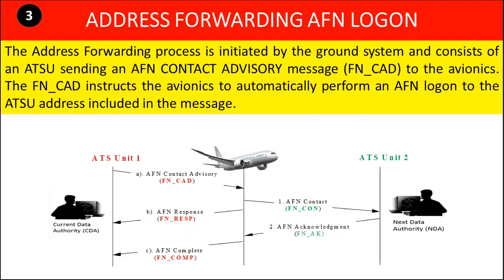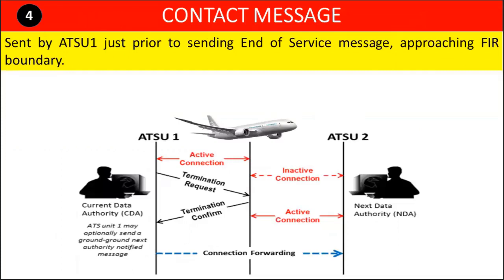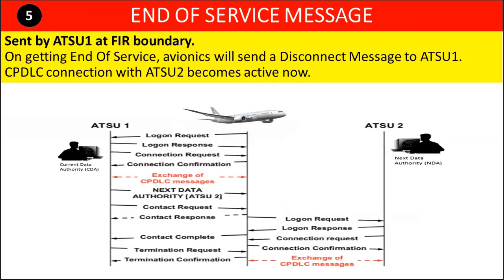Address forwarding is initiated by ATS unit 1, which instructs the avionics to forward the aircraft's address to ATS unit 2. This allows the next ATS unit to establish an inactive CPDLC connection. A contact message is sent by ATS unit 1 just prior to sending the end of service message, approaching the flight information region boundary. This ensures that a controlled flight is under the control of only one ATC unit at any given time. The end of service message is sent by ATS unit 1 at the FIR boundary, after which the avionics send a disconnect message to ATS unit 1 and the connection with ATS unit 2 becomes active.